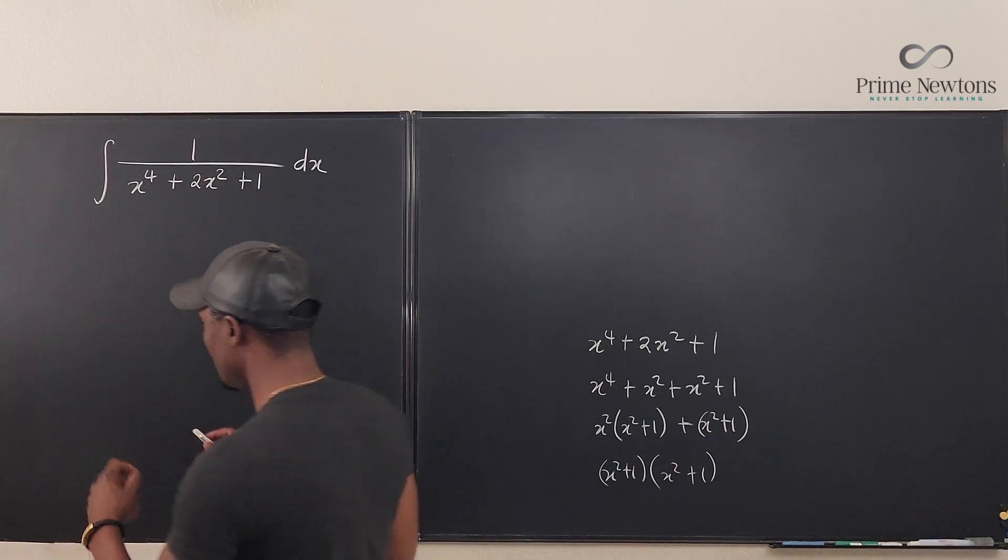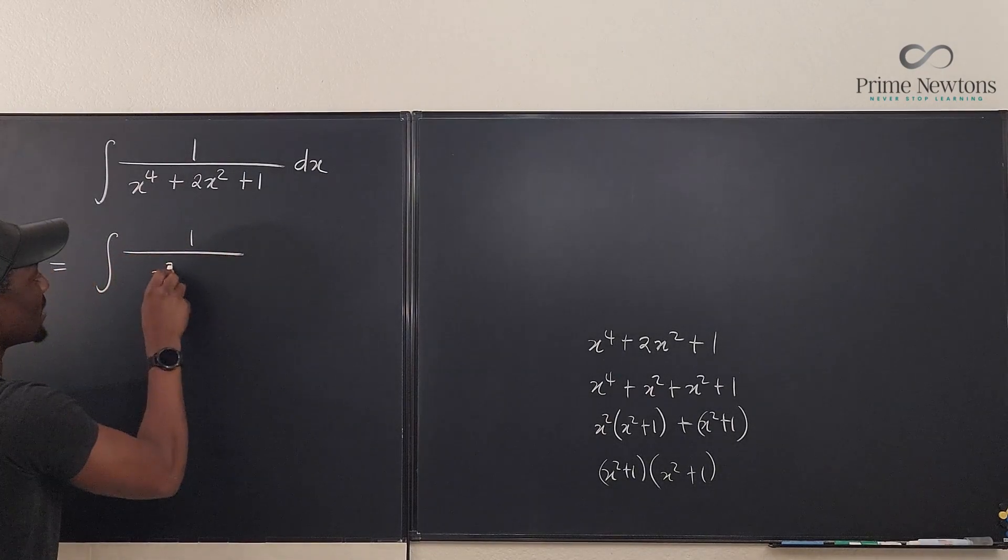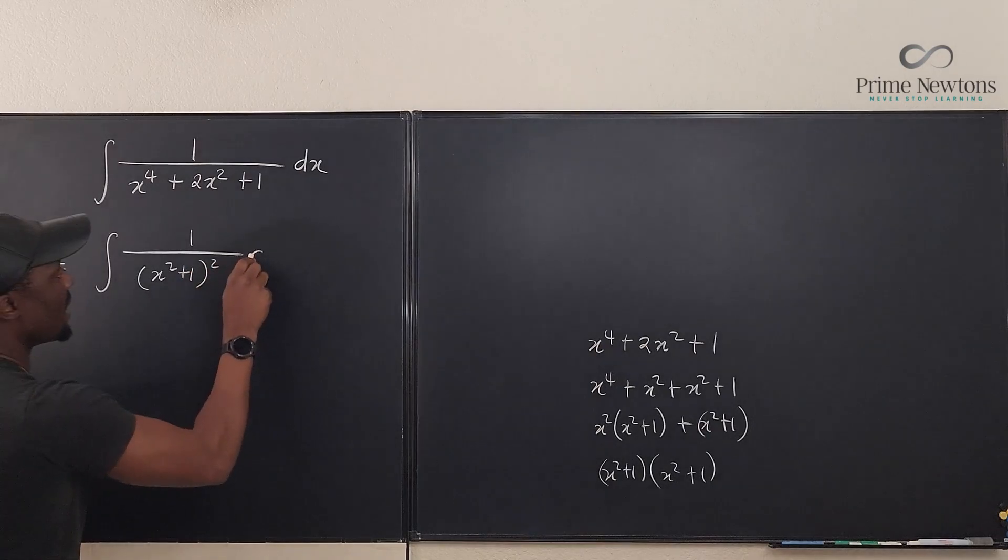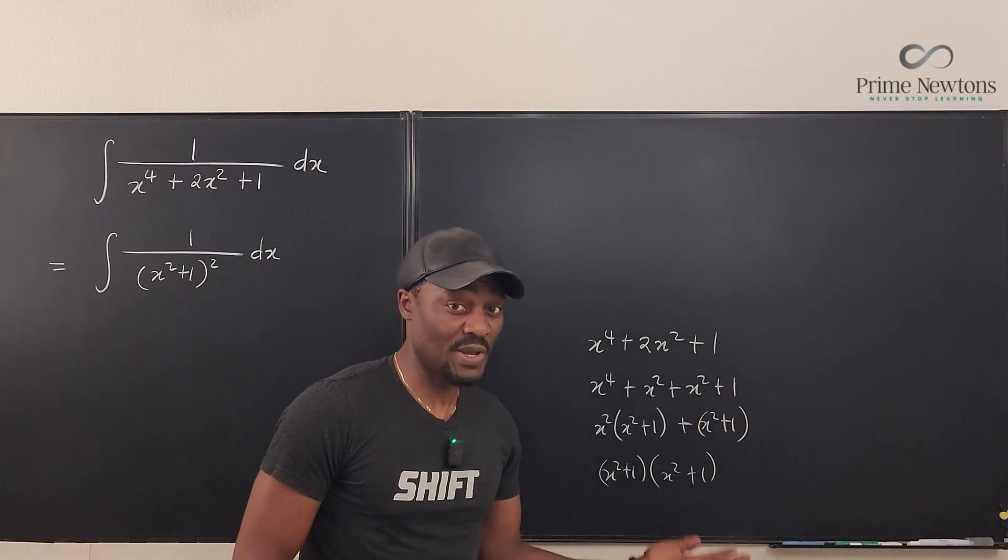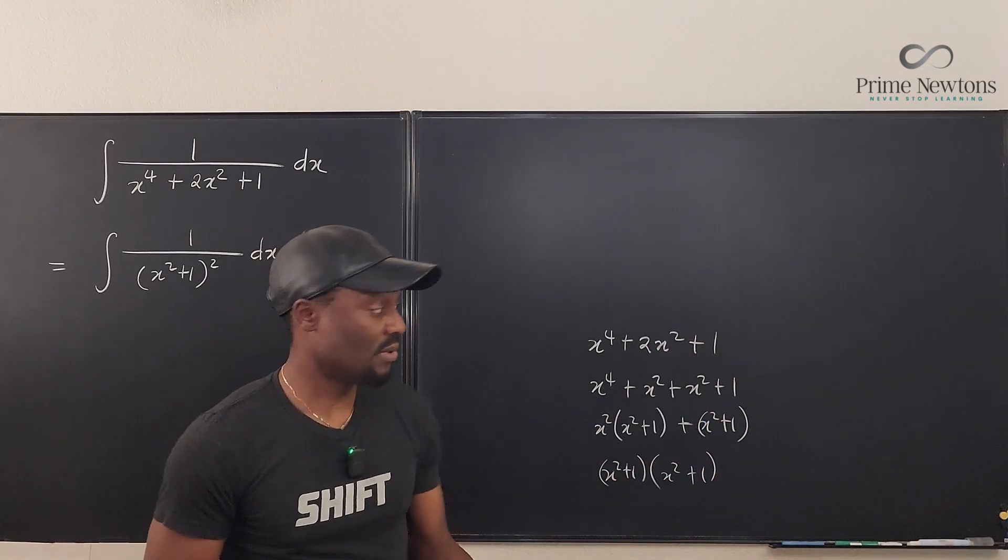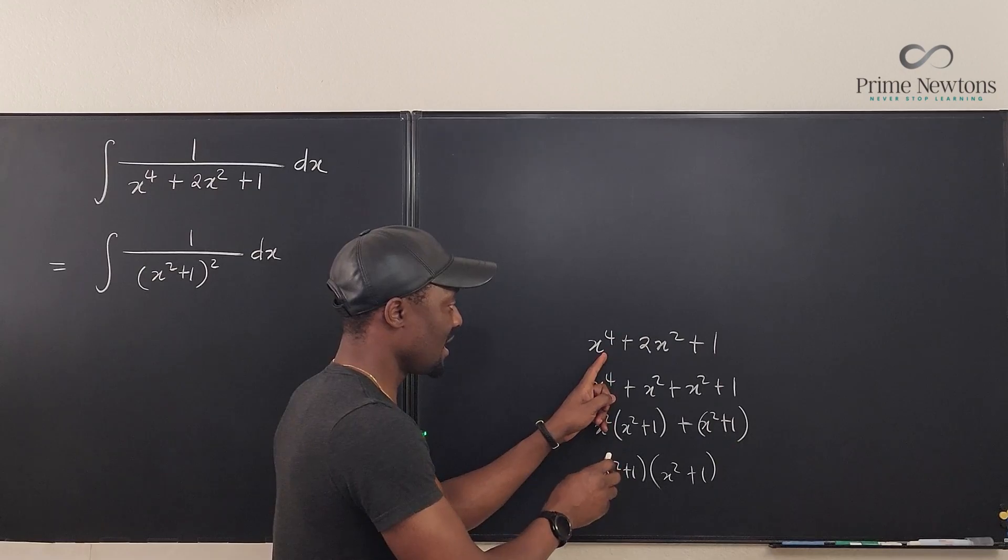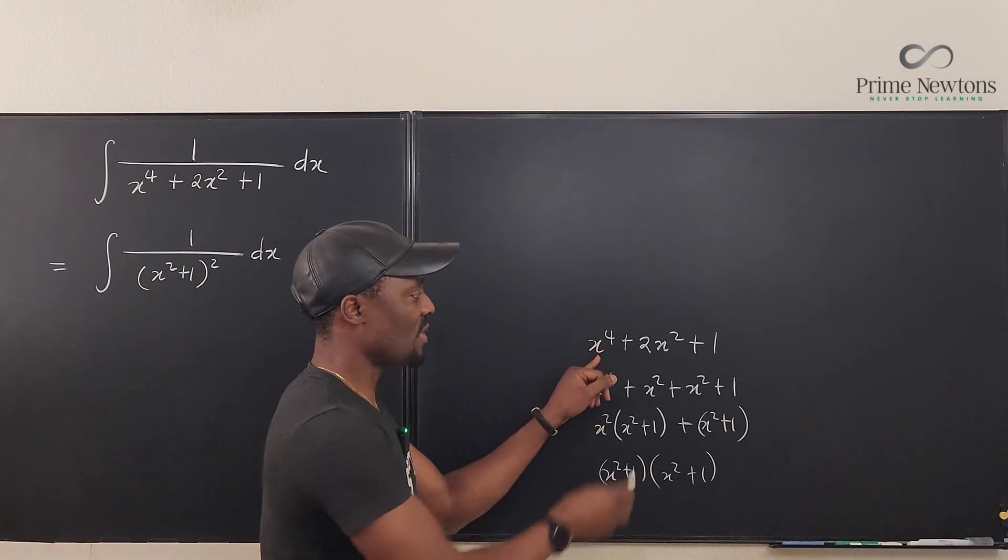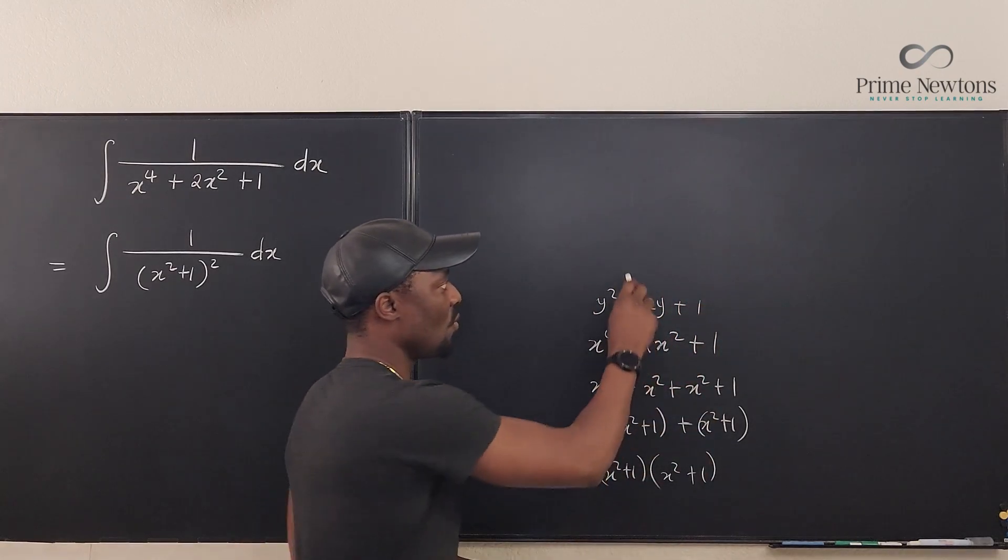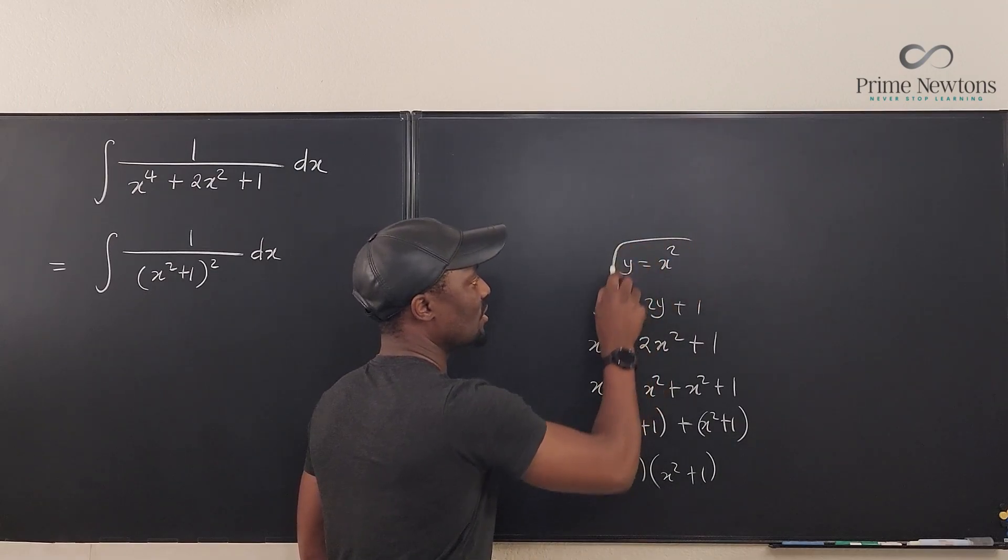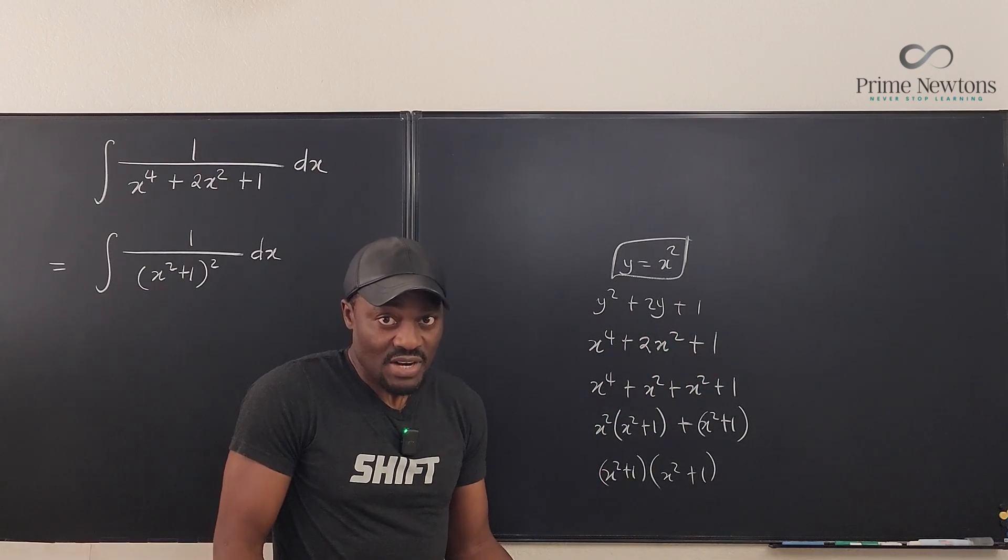So what I have under here, this integral can be written as the integral of 1 over (x^2 + 1)^2. Now you don't need to show all of this. I'm just showing you that if you're not sure whether it's factorable, you can run through a process like this. Or you can assume that x^2 is y, so you can say let x^2 be y, so this is now y^2 + 2y + 1.